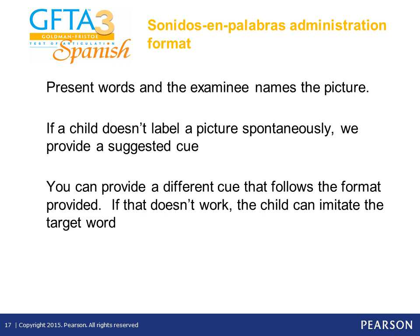If you're familiar with the GFT3 English, there's no need to learn a new test administration process. You present the words and the individual names the picture. If the individual doesn't label a picture spontaneously, the test provides a suggested cue, or you can provide a different cue that follows the format provided. The format is: state the word — for example, if the word is perro, you say 'Esto es un perro. Ladra. ¿Qué es esto?' And then the child has to say the word perro.